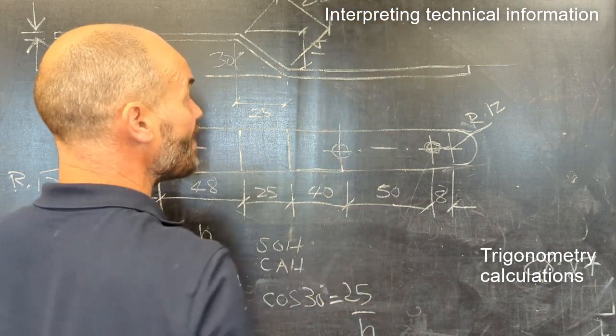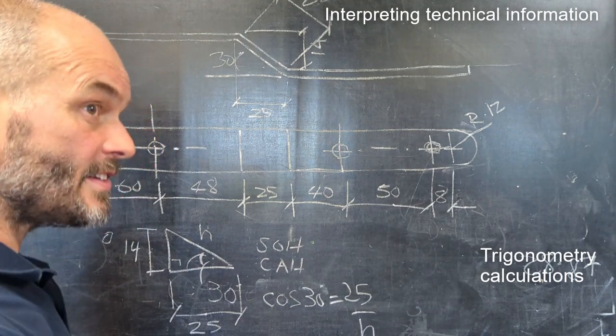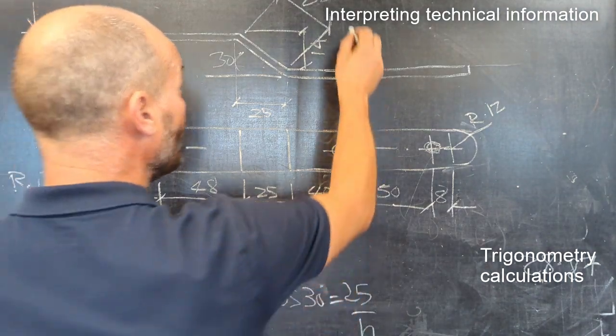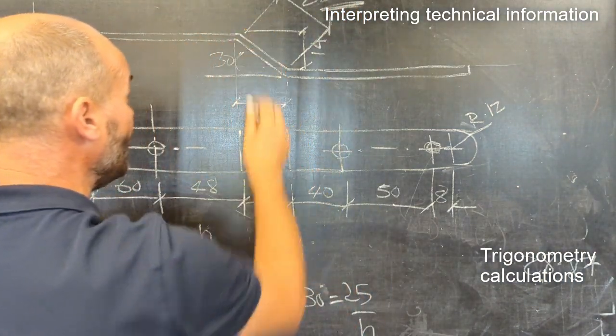You're going to do some rounding. Your general tolerance is 0.3, remember, so that's the size that you're going to put in.